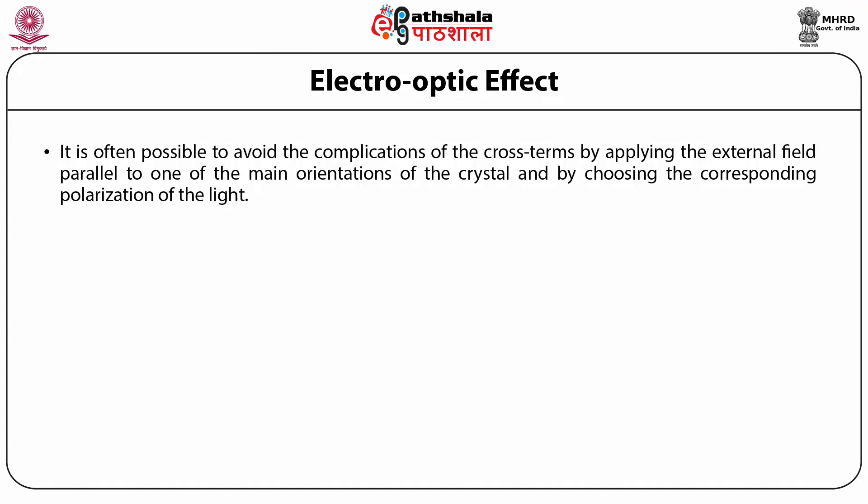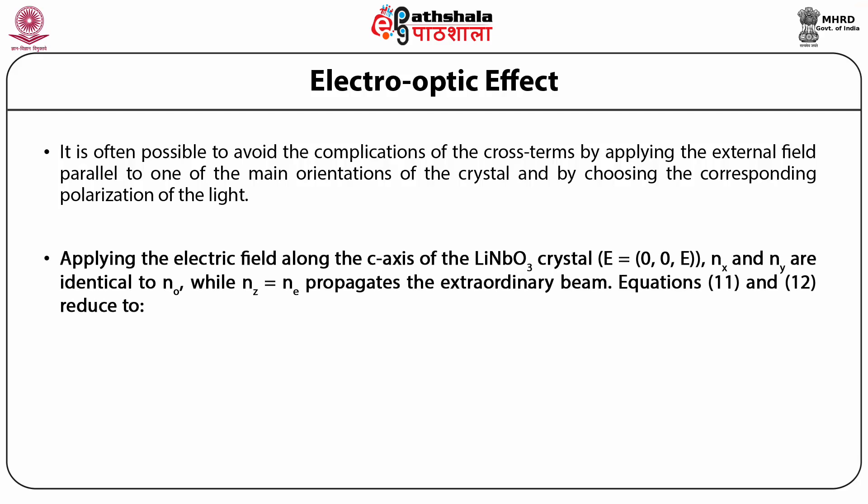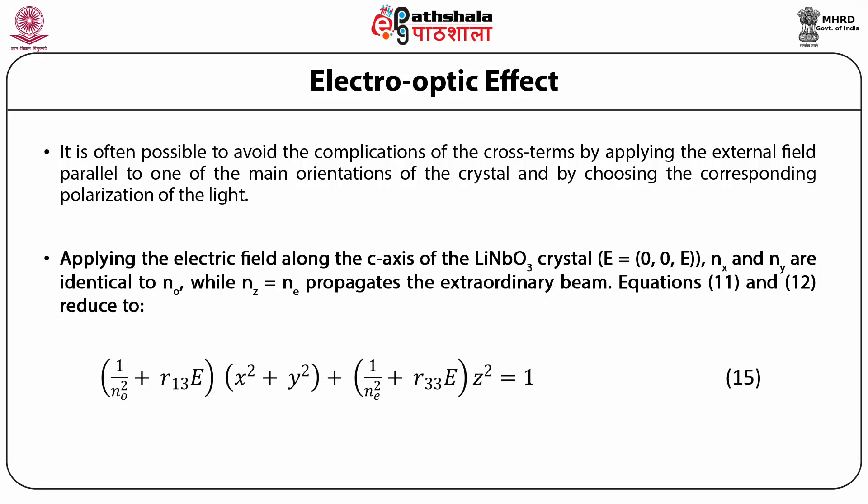It is often possible to avoid the complications of the cross terms by applying the external field parallel to one of the main orientations of the crystal and choosing the corresponding polarization of the light. Applying the electric field along the C-axis of the lithium niobate crystal — i.e. E = (0, 0, E) — N_X and N_Y are identical to N_0 while N_Z = N_E, propagating the extraordinary beam. By this logic, equations 11 and 12 reduce to: (x² + y²)(1/N_0² + R₁₃E) + z²(1/N_E² + R₃₃E) = 1.